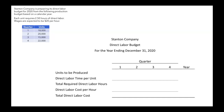The first step is just plugging in the numbers for the units to be produced. We got those amounts from the table that we were given previously. In the first quarter we're going to be producing 18,000 units, and in the second quarter 20,000.